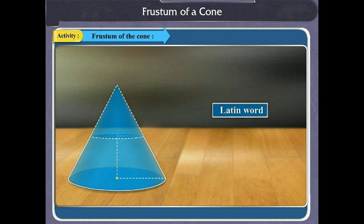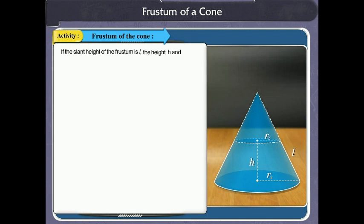Now, if the slant height of the frustum is l, the height h, and the radii of the two ends r1 and r2, where r1 is greater than r2, then the slant height l of the frustum is equal to square root of h squared plus in bracket r1 minus r2 the whole squared.